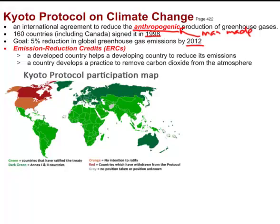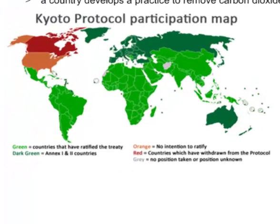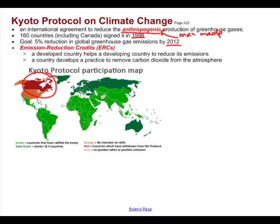Here's a map showing the Kyoto Protocol participation. The most interesting thing for us to notice is that Canada pulled out — we decided politically that we could not participate in the Kyoto Protocol, that we could not meet its deadlines or its requirements. And we bailed.